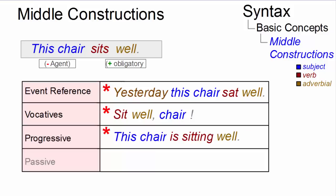Furthermore, middle constructions cannot occur in the progressive aspect as in the ungrammatical sentence, this chair is sitting well, and middles cannot be passivized since middle verbs have no objects. It was sat well by this chair doesn't work.